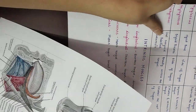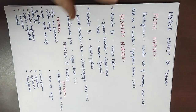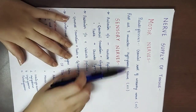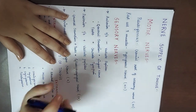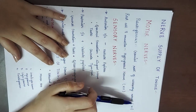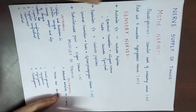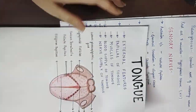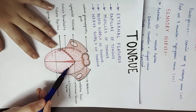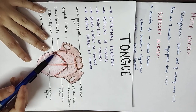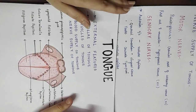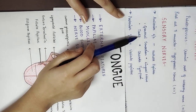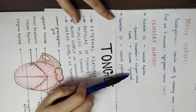After the muscles, let's learn the nerve supply of the tongue, which is also a very important topic. All eight muscles — both extrinsic and intrinsic — are supplied by the hypoglossal nerve, which is the 12th cranial nerve, except for the palatoglossus, which is supplied by the cranial root of the accessory nerve, the 11th cranial nerve.